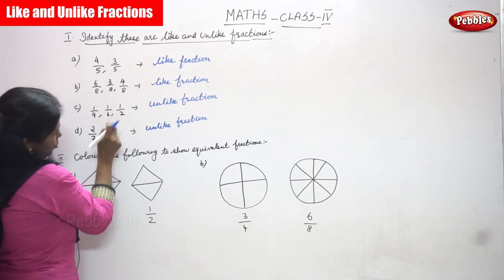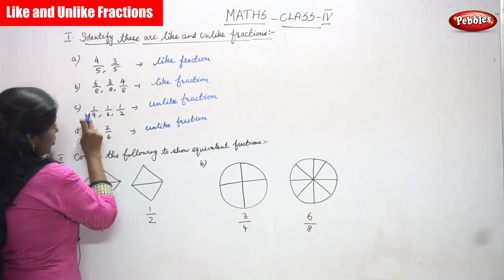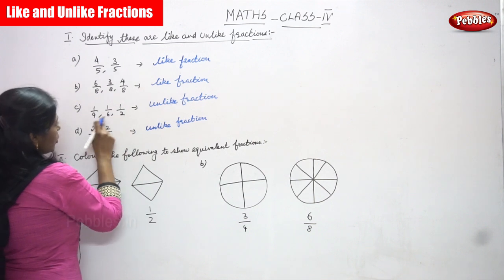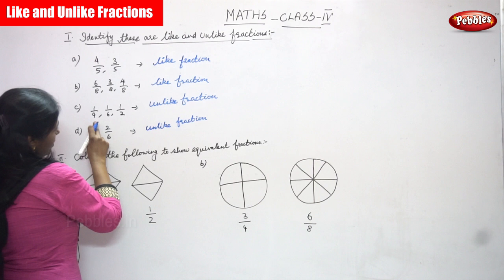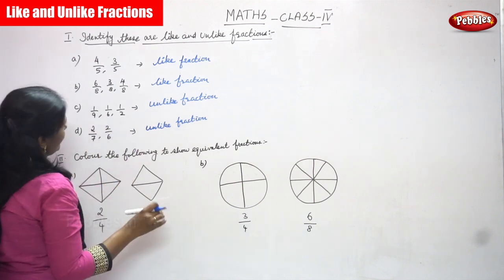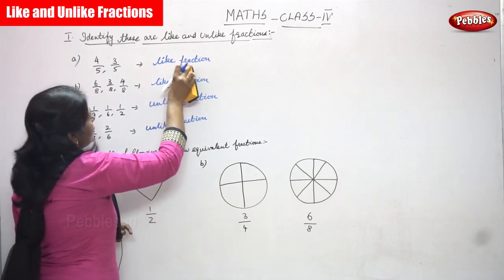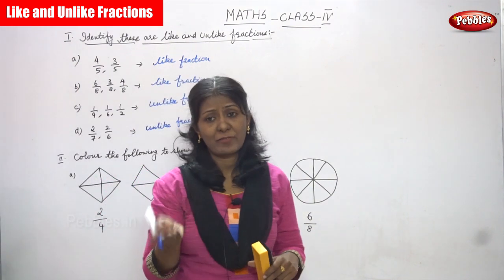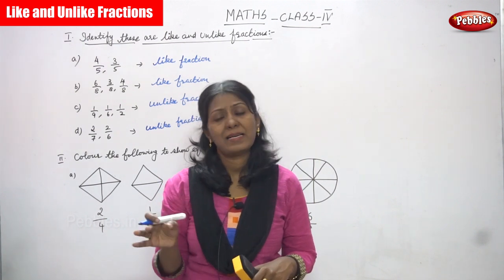Let me repeat. 1 by 9, 1 by 6, 1 by 2. Look at all the denominators. All the numerators are similar but look at the denominators — all the denominators are different, they are not the same. So it is an unlike fraction. To summarize: like fraction means if the denominators are same, it is a like fraction. If the denominators are not same, it is an unlike fraction.